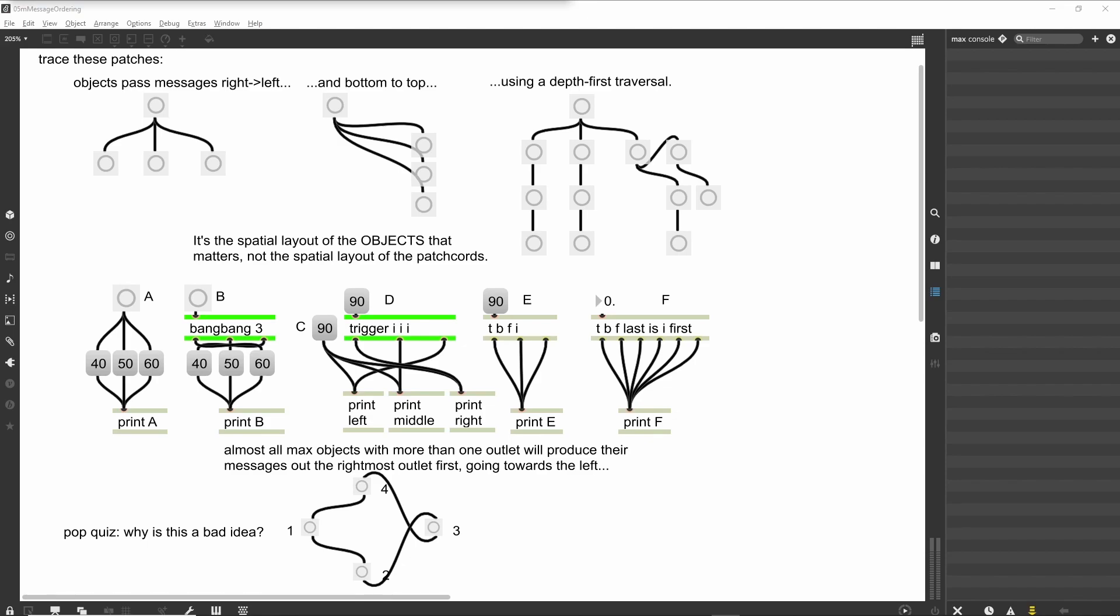We will also use some of the debugging tools in Max to determine how a patch is running. Max patches often seem to have everything happening at once. In reality, messages are produced and acted upon in a specific order. In order to make patches that operate correctly, we need to understand the order in which things occur and how to control complex matrices of actions.